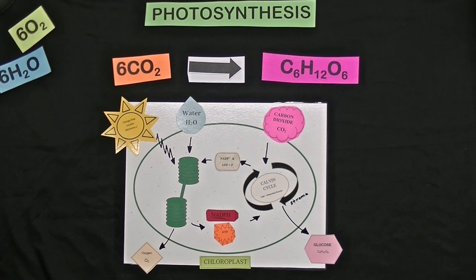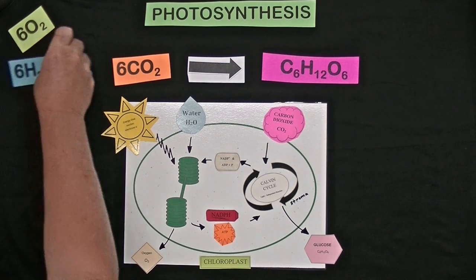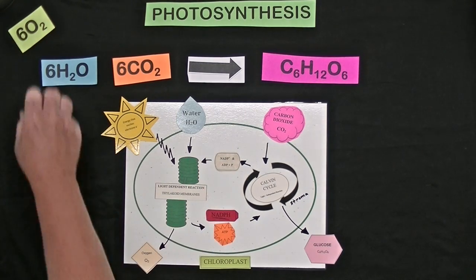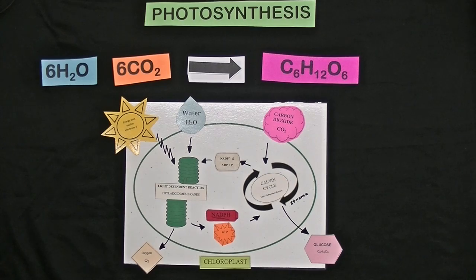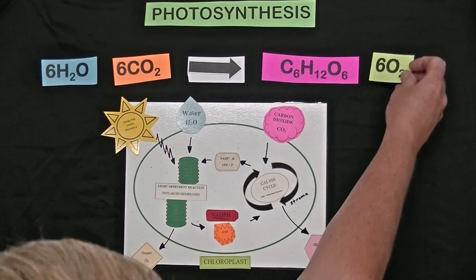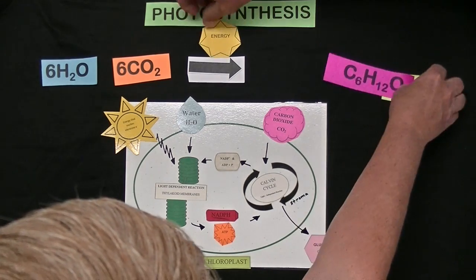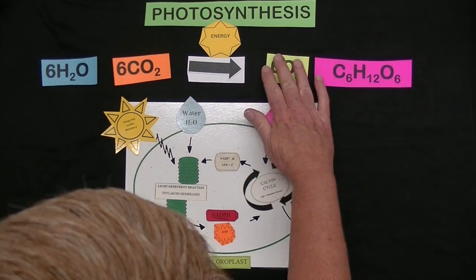So the two reactions for photosynthesis are the light-dependent reaction which occurs in the thylakoid membranes and the Calvin cycle which occurs in the stroma.